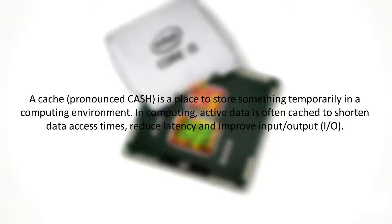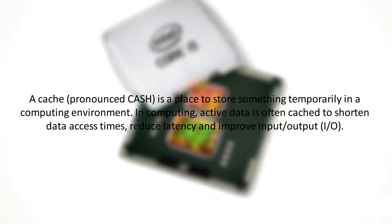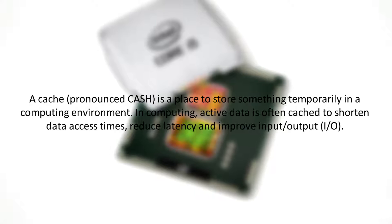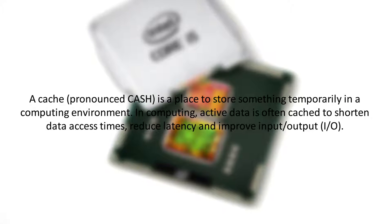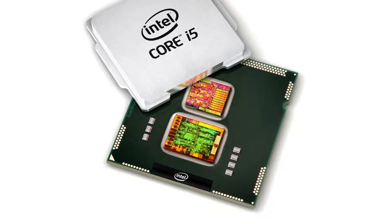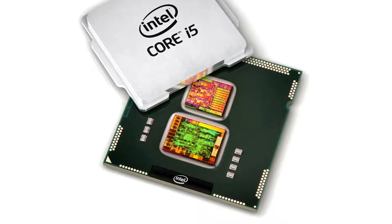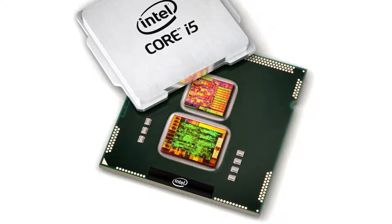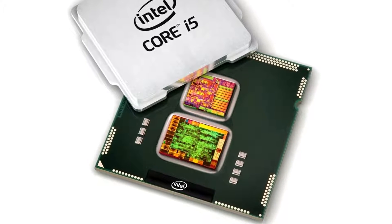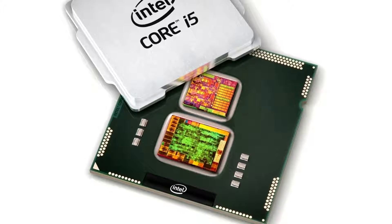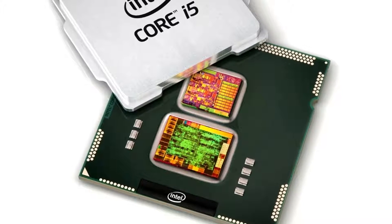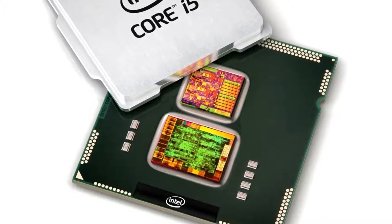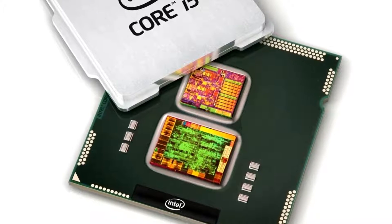A cache is a place to store something temporarily in a computing environment. Active data is often cached to shorten data access times, reduce latency and improve input/output (I/O). Because almost all application workload is dependent upon I/O operations, caching is used to improve application performance. For example, web browsers such as Internet Explorer, Firefox, Safari and Chrome use a browser cache to improve performance for frequently accessed web pages.